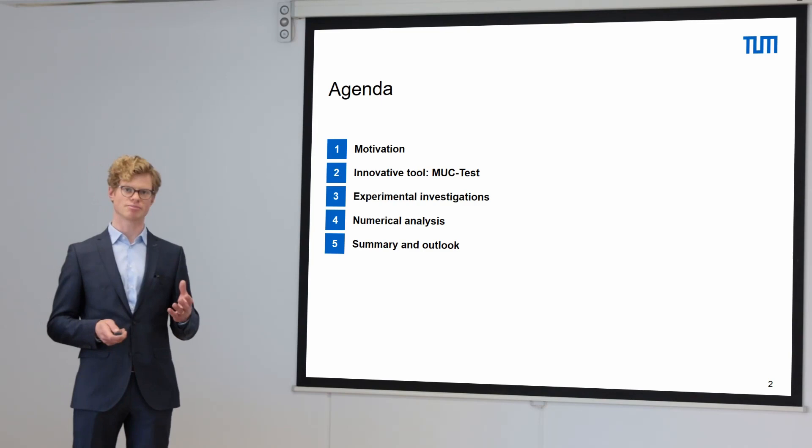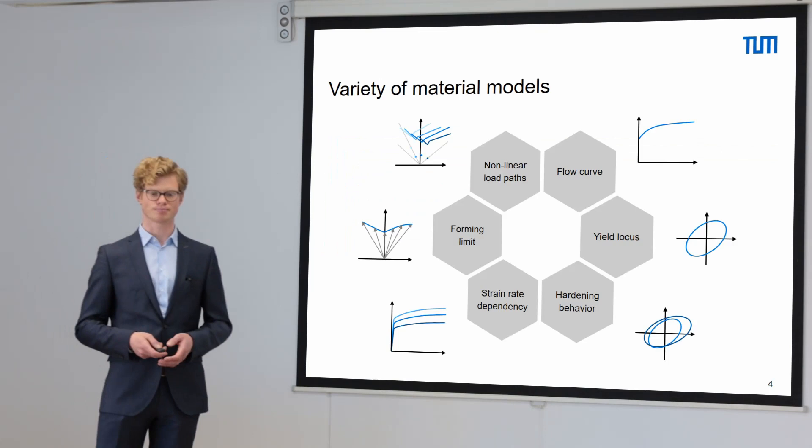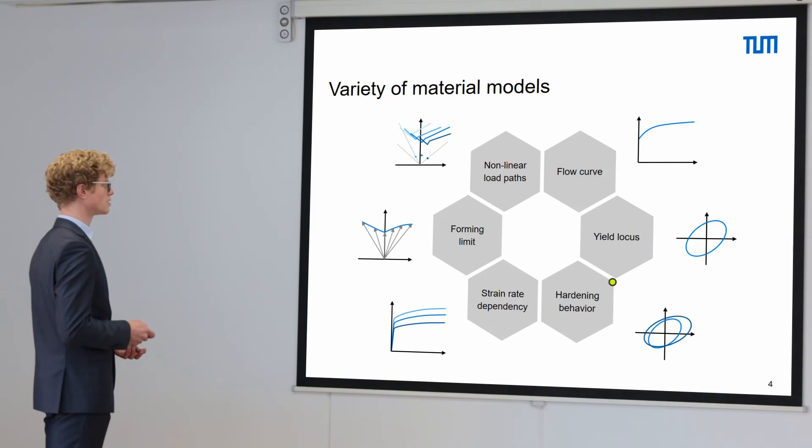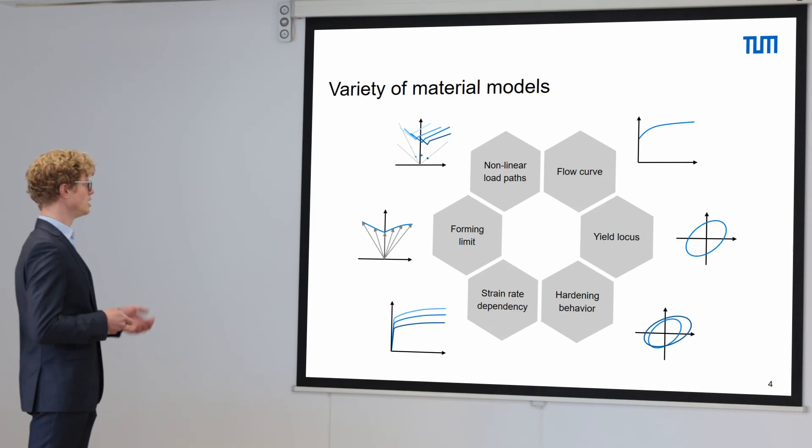So let's start with the motivation. There is a variety of different material models for the use in sheet metal forming. For example, the flow curve, the yield locus and its hardening behavior, the strain rate dependency, and if we think about failure we have the linear and nonlinear forming limit.